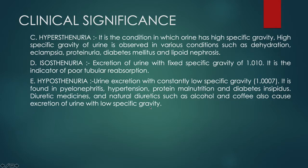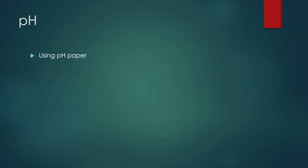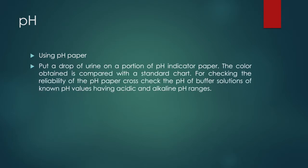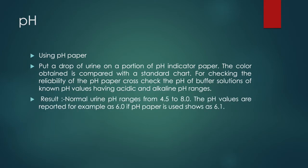Now for the last point — pH measurement of urine. You can use a simple pH paper, the same kind used in biology or chemistry labs. Place the pH paper in the urine; once it is soaked, the paper changes color. Compare this color with the reference color chart to determine whether the urine pH is normal, acidic, or alkaline. The normal urine pH range is from 4.5 to 8, with a typical reported value of around 6.0, meaning urine is generally slightly acidic in nature.